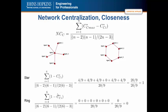Network centralization closeness. You will notice the denominator has changed for closeness centralization, and as before we leave this as an exercise for interested students to verify. In the star network, the maximum centrality value is 1 and the centrality value for the other peripheral nodes is 5/9. Thus, 1 minus 5/9 is 4/9, and the numerator is 4/9 times 5, or 20/9. The maximum for the denominator is also 20/9, which gives us a closeness centralization of 1. In the ring network, all centrality values are the same, giving a value of 0.